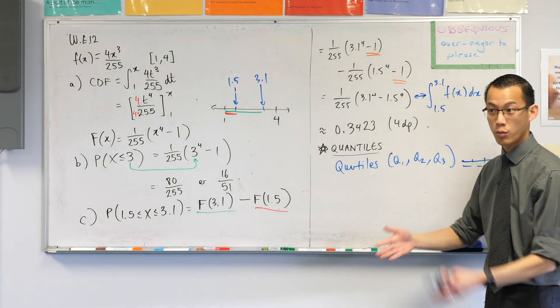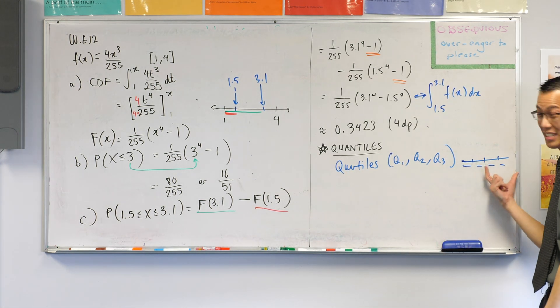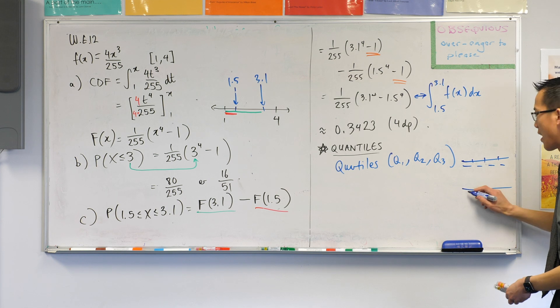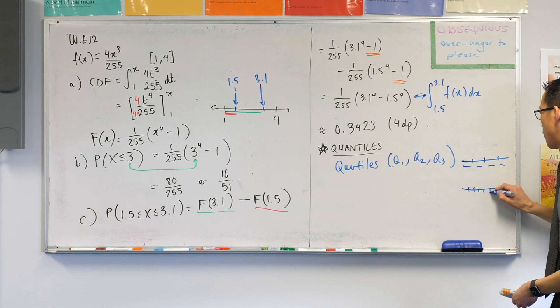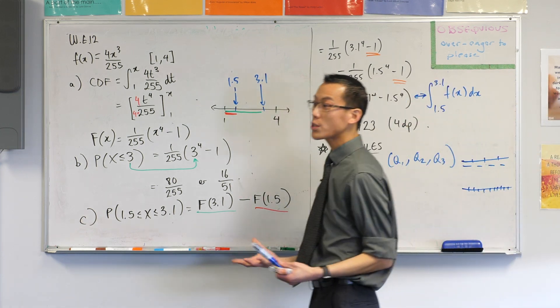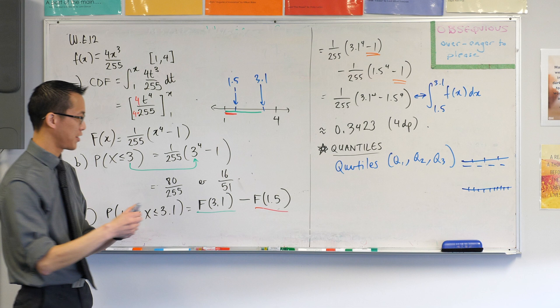But quartiles are not the only kind of way to divide up. Maybe you want more detail than dividing into fours. So if, for example, you took this same thing and divided it into one, two, three, four, five, six, seven, eight, nine, ten groups, you wouldn't call them quartiles anymore. There's ten of them, so we call them deciles.